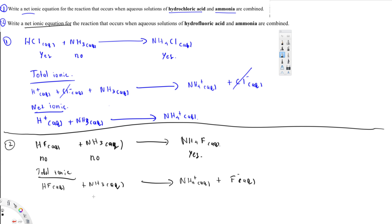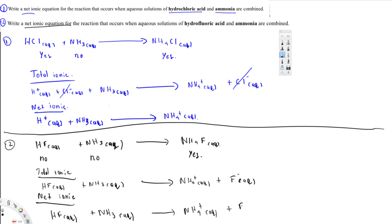If you look at the spectator ions, we don't have any ions that exist on both sides, so we can't cancel anything. Therefore the net ionic equation is the same as the total ionic equation: HF aqueous plus NH3 aqueous yields NH4⁺ aqueous plus F⁻ aqueous. That's the entire equation — hope you guys liked this video, see you next time.